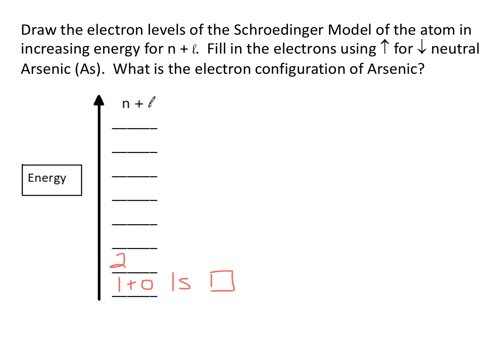When we move to the second principal quantum number, there are two levels, a 0 and a 1 for L. So we are now dealing with the 2s and the 2p. And you may remember that the 2s has one potential M sub L value. The 2p has three potential M sub L values. So I'll put those in banana bunches of three.